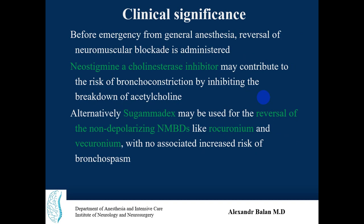Before emergence from general anesthesia, reversal of neuromuscular blockade is administered using cholinesterase inhibitors such as neostigmine, which may contribute to bronchoconstriction risk by inhibiting acetylcholine breakdown. An alternative exists: for non-depolarizing agents like rocuronium and vecuronium, sugammadex can be used, with no associated increased risk of bronchospasm.